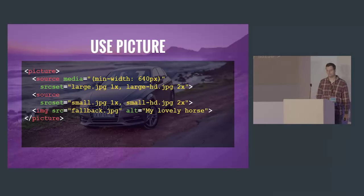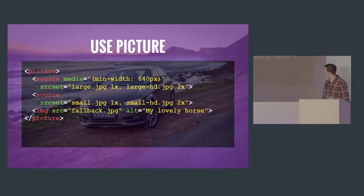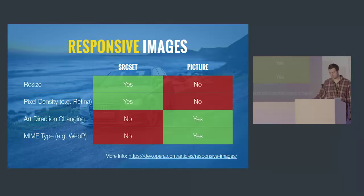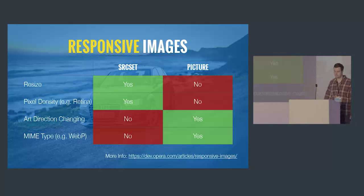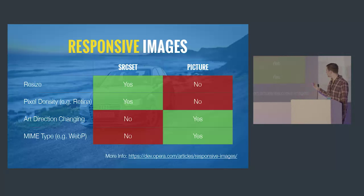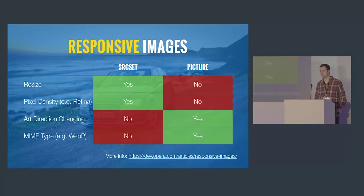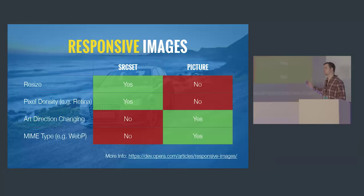With the picture element we specify the number of sources we want and then specify a fallback image. So if we're resizing or changing pixel density, use srcset; if the art direction is changing or we're changing the image type — perhaps supporting WebP for some browsers — then use the picture element. There's a really good article on the Opera Developer Center that goes through all the combinations and when is the right time to use each.